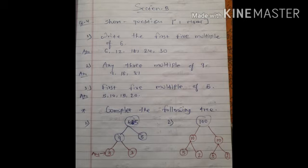Write the first five multiple of six. So, six ones are six, six twos are twelve, eighteen, twenty-four and thirty.